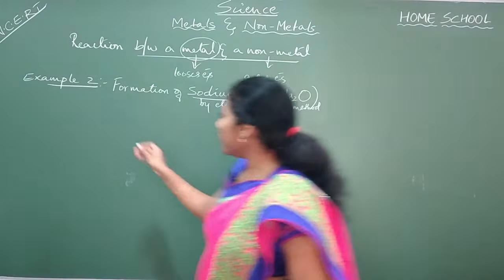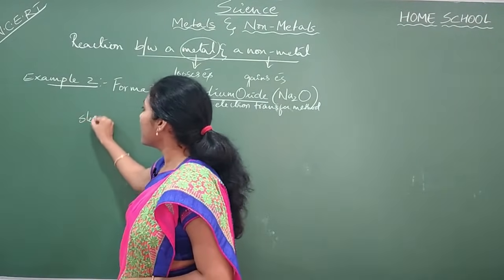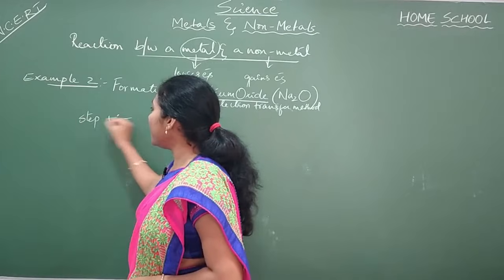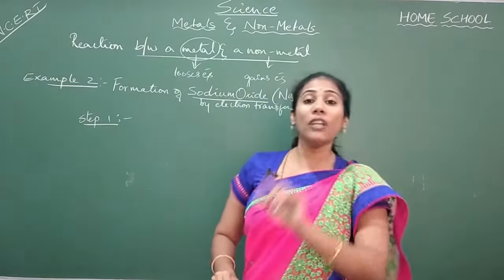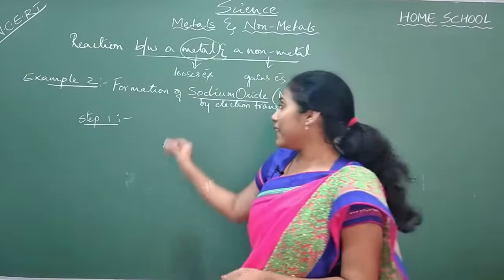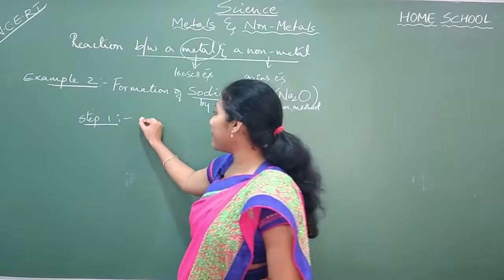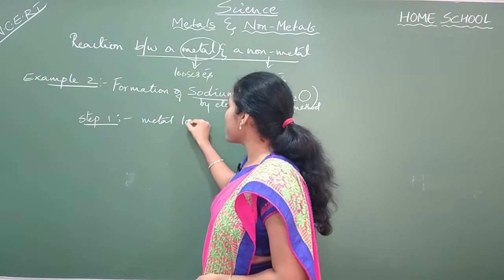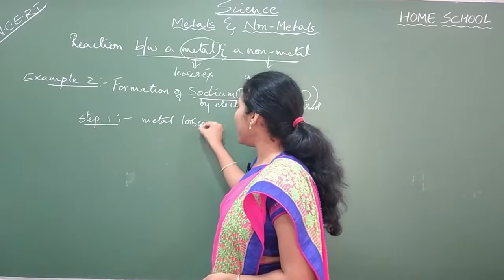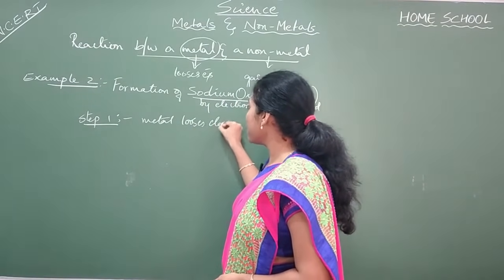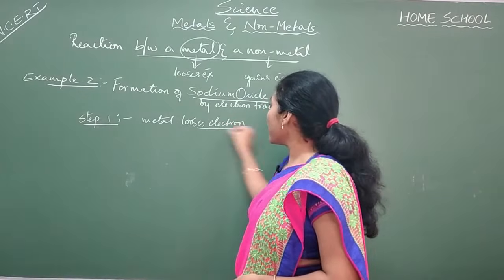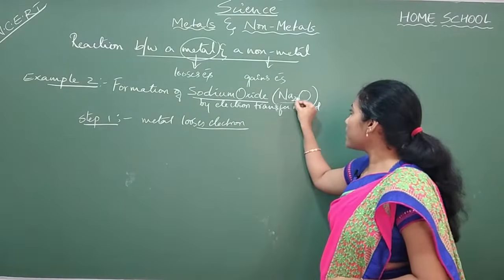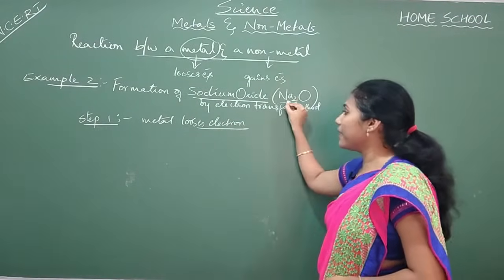We will work out step number 1. In step number 1, metals always lose electrons. So, in sodium chloride, who is a metal? Sodium is a metal.